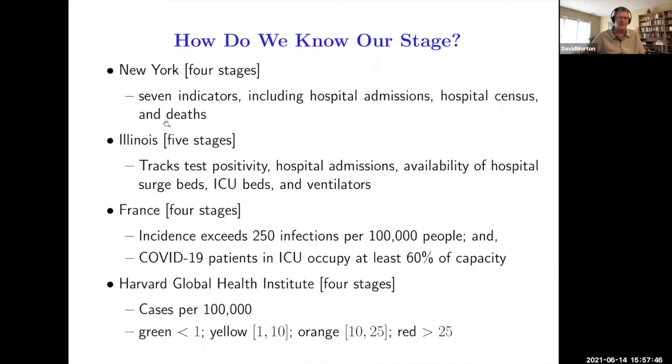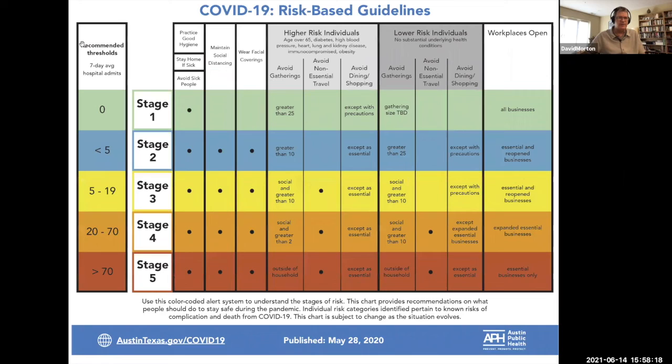What's the use of surge beds, ICU beds, ventilators? France had a system that involved the incidence of infections among 100,000 people and how occupied are ICU beds. There's a global health institute at Harvard that had a recommendation as well. What we did with Austin is we just tracked one metric, and we tracked the seven-day moving average of hospital admissions. And then we built a model that said what we're going to try to do is minimize the amount of time spent in the strictest stage of lockdown. But we're going to have a chance constraint that says we want the probability that we exceed hospital capacity to be small, like 5% or smaller.